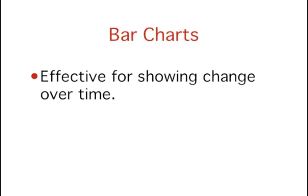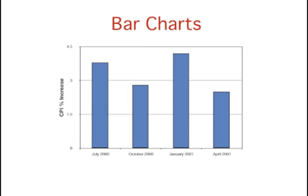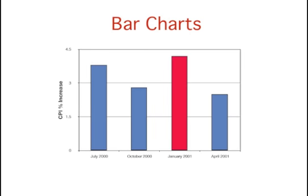The next example will show that bar charts are very effective for showing change over time. Here you see the percent increase in the Consumer Price Index (CPI) over four three-month periods. The CPI represents how much typical consumer items cost. Which months show the greatest increase? If you said January 2001, then you are correct. The smallest increase was in April. This bar chart makes clear the percent increases in CPI and their changes over time.